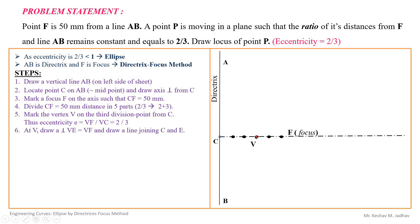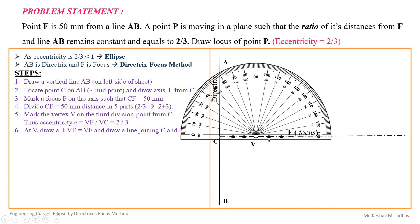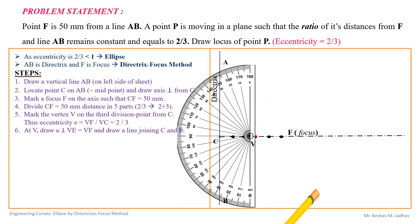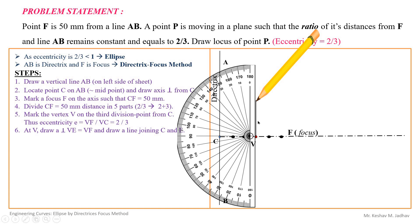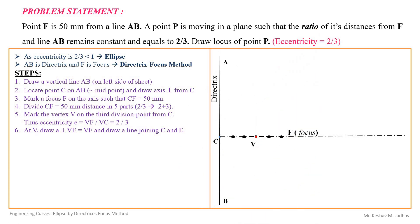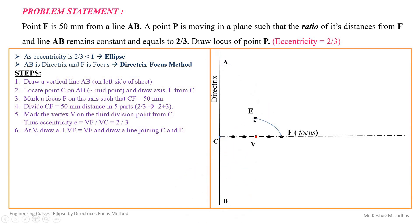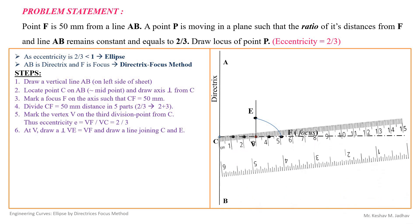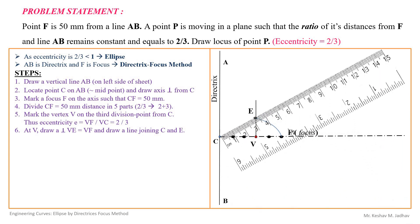From point V, draw a vertical line perpendicular to the horizontal axis. On this vertical line, locate point E such that distance VE equals distance VF, with VE perpendicular to VF. Then draw a line joining points C and E.